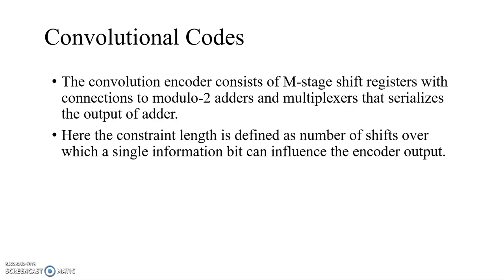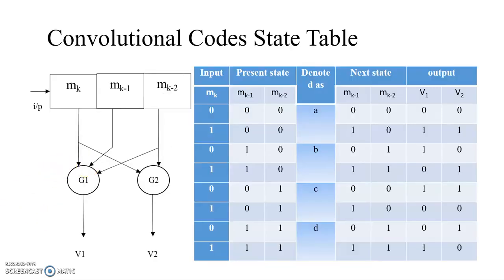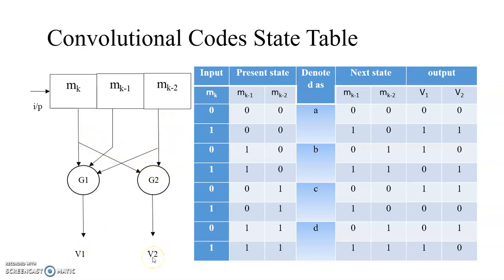The constraint length is defined as the number of shift registers. Here we see this is the convolutional encoder. There are three shift registers, so the constraint length is 3. G1 and G2 are the adders. G1 has Mk plus Mk minus 1 plus Mk minus 2, and G2 is the addition of Mk and Mk minus 2. V1 and V2 are the outputs.